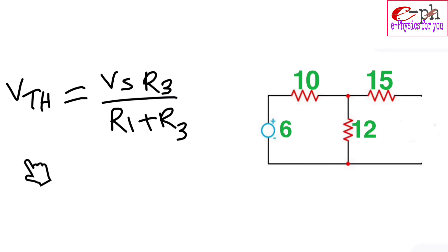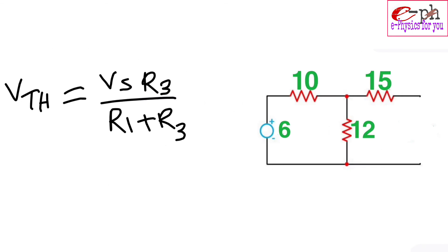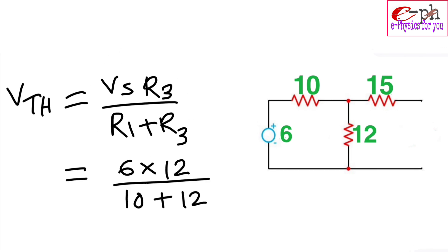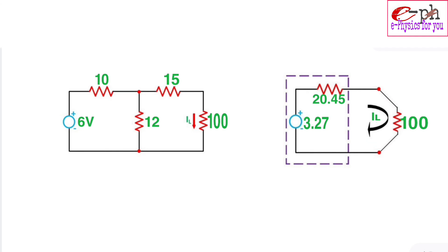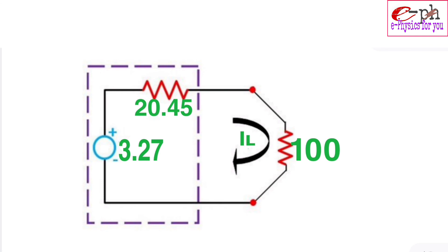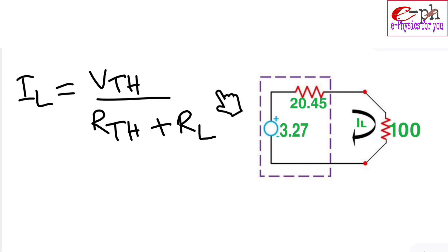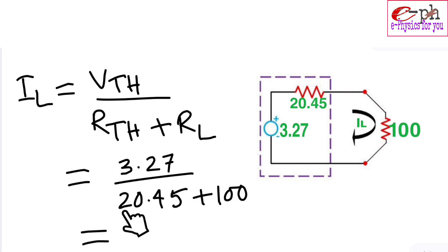Next we calculate the value of Vth. Using the formula derived earlier and substituting the given values, we get Vth = 3.27 V. This gives us the equivalent network of the circuit. Now we calculate the load current IL using the equation IL = Vth / (Rth + RL), substituting the values, and we get IL = 0.0271 A. So this amount of current flows through the load resistance.